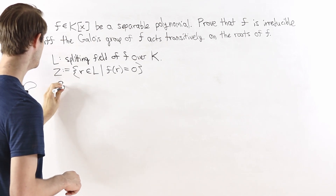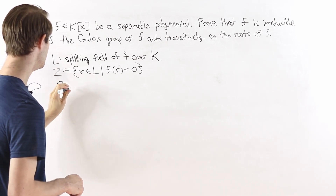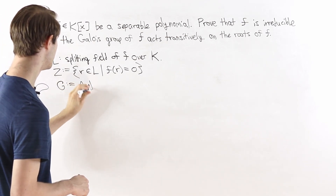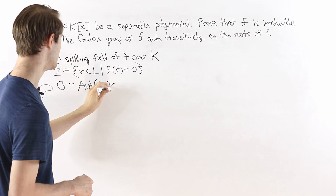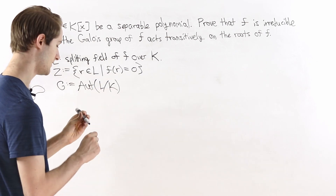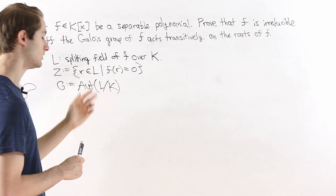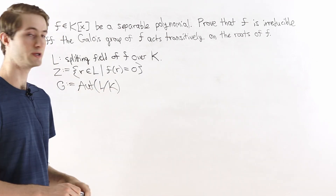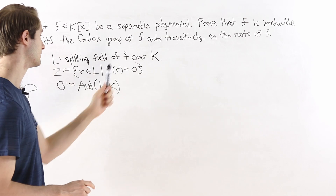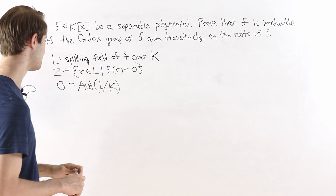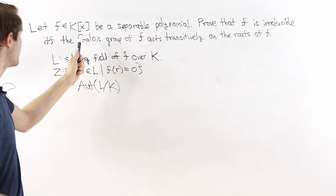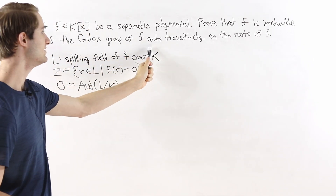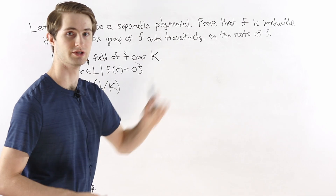We'll define G to be the automorphism group of the field extension L over k, which is also called the Galois group since L is a splitting field of our polynomial f. Now the question talks about the Galois group of f acting on the roots of f, so we need to consider a group action.